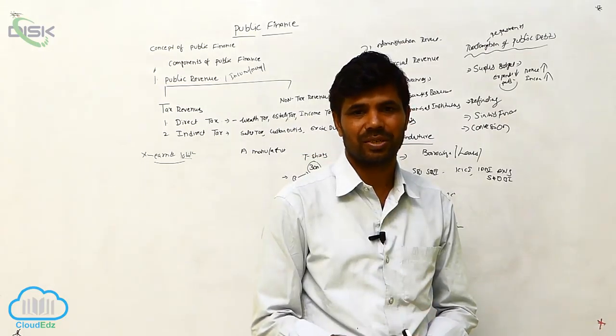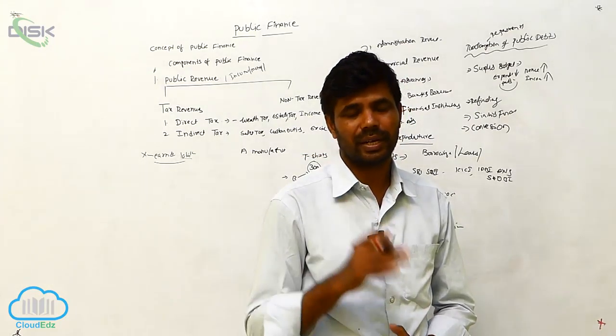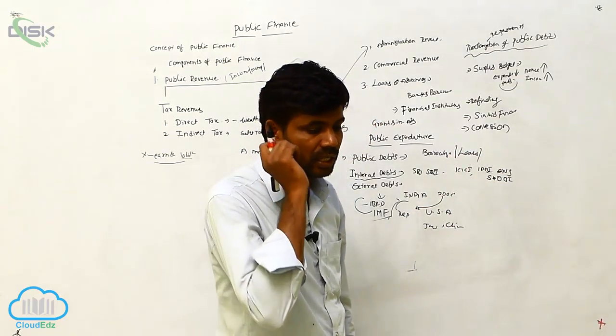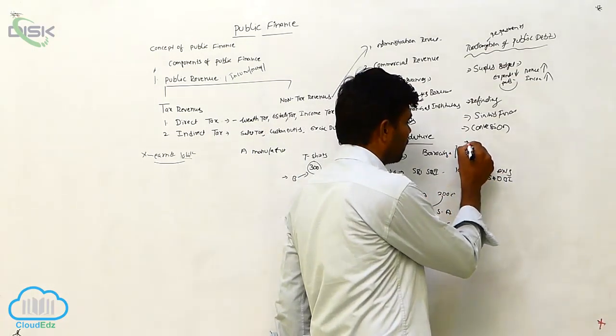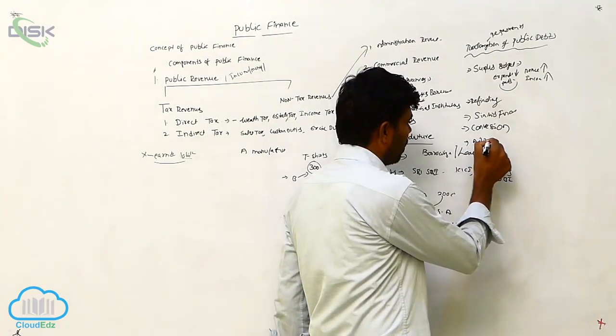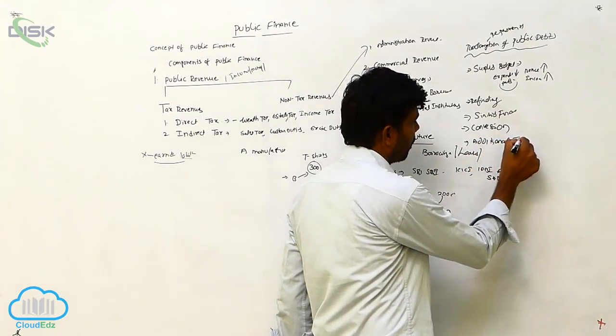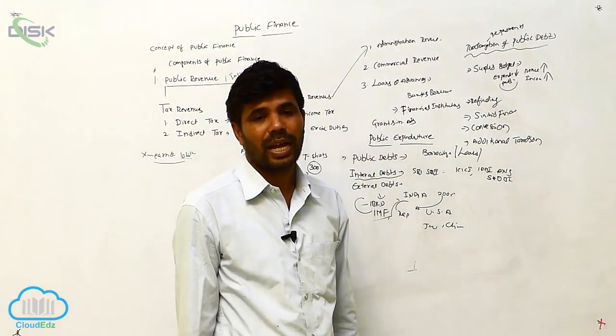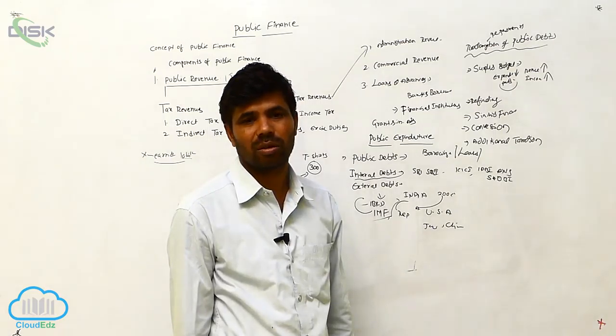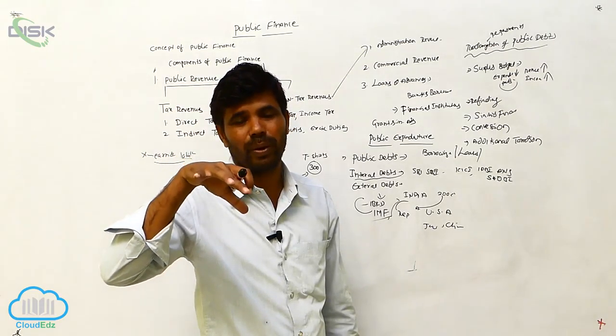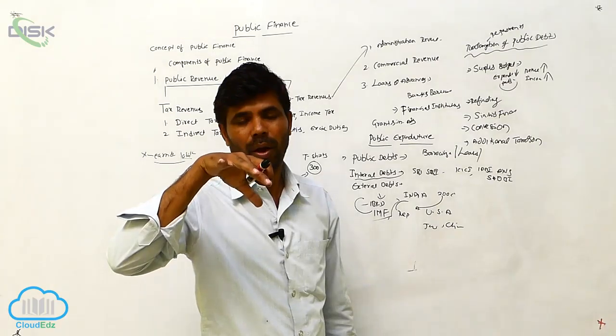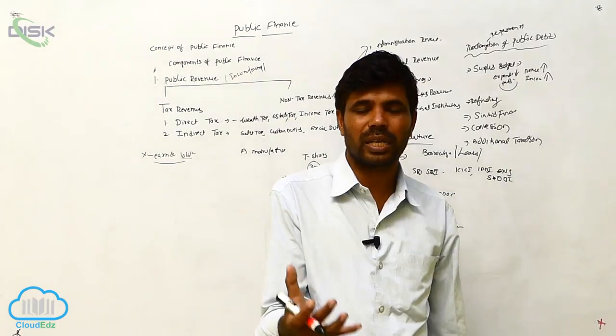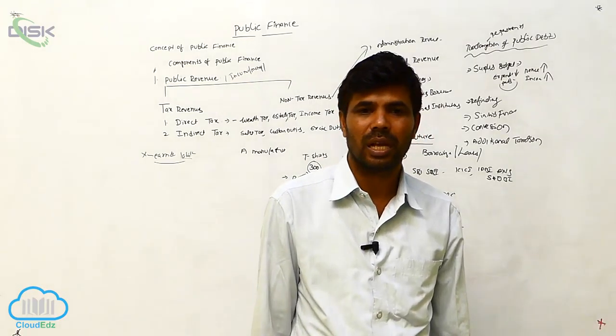Next is additional taxation. Tax means it is direct or indirect taxes. Additional tax also will be paying. They are collecting the revenue, so whatever additional taxes are collected, that can also be used to pay the public debts.